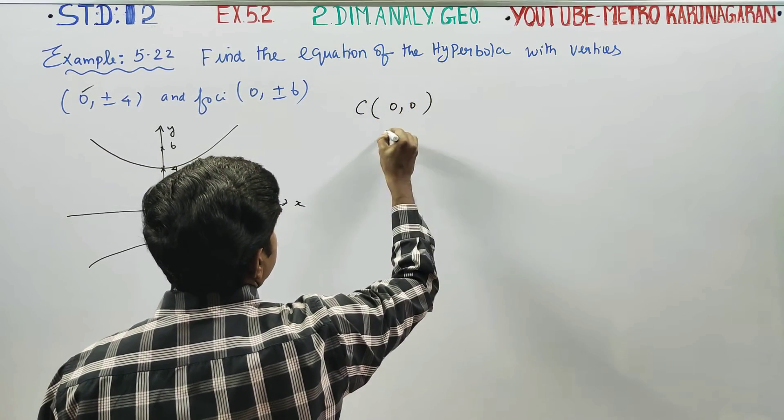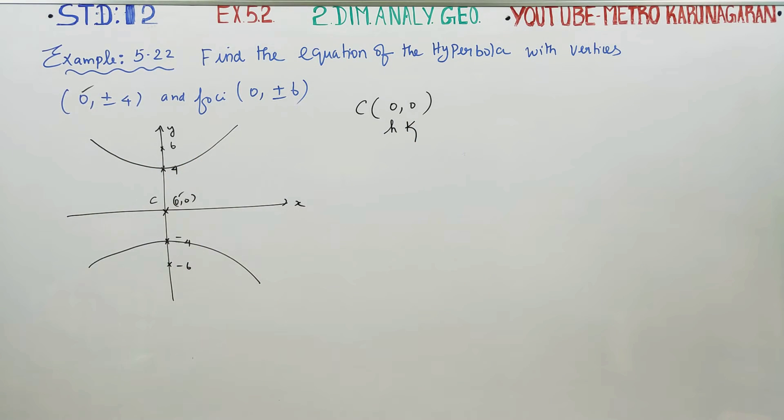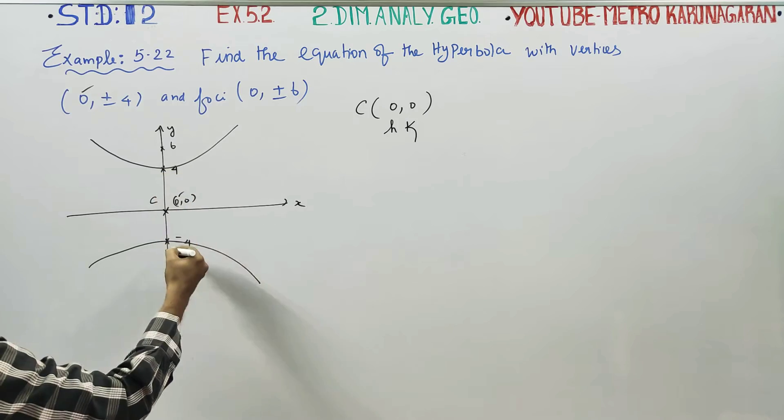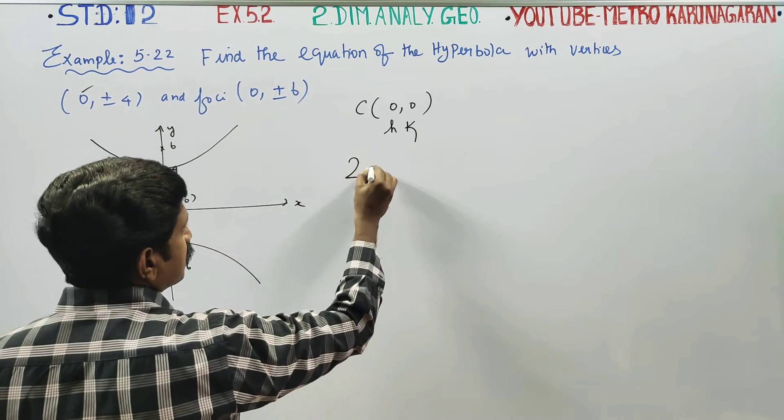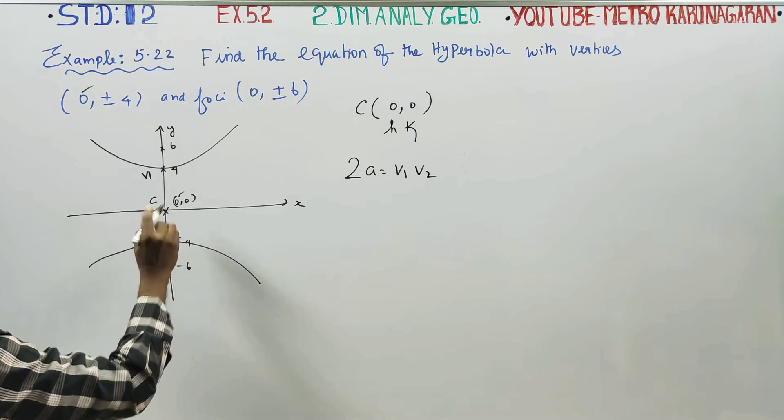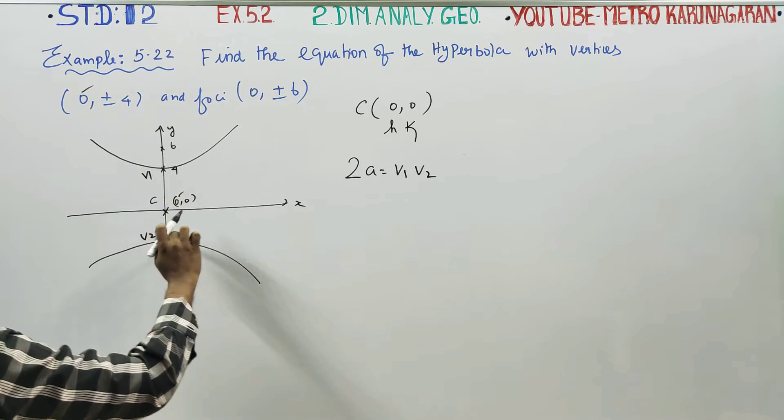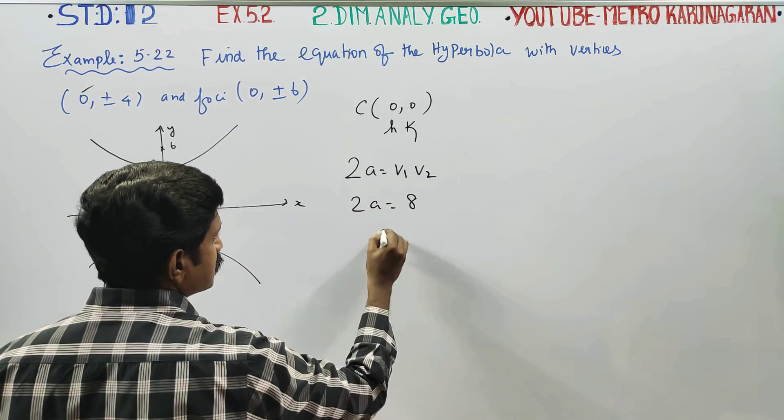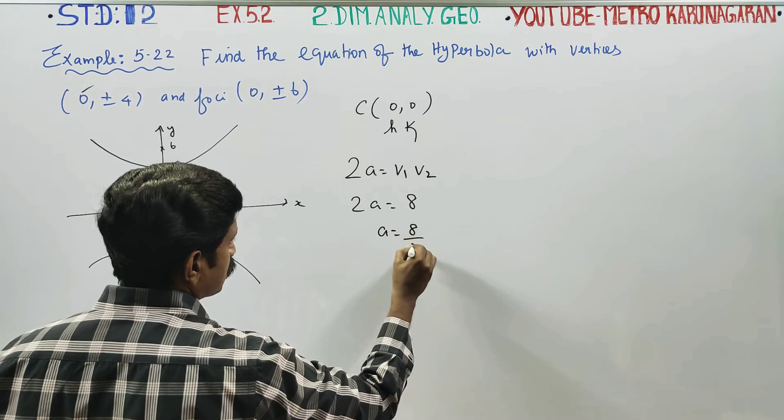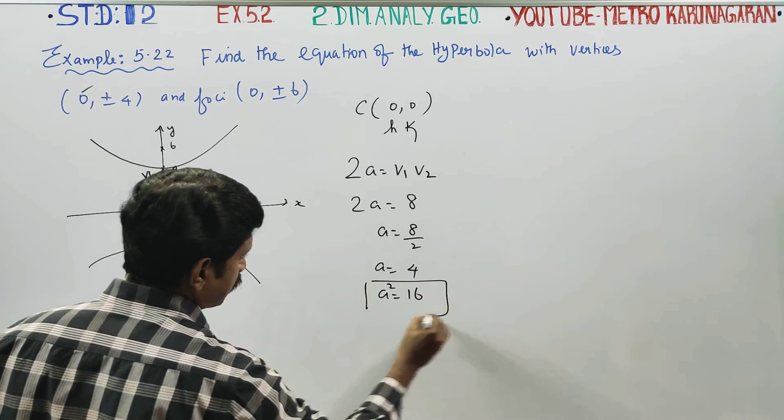This is my V1 and this is my V2. V1 is 4 units. Distance, total distance 2A is equal to 8 units. A is equal to 8 by 2. A is equal to 4. A square is equal to 16.